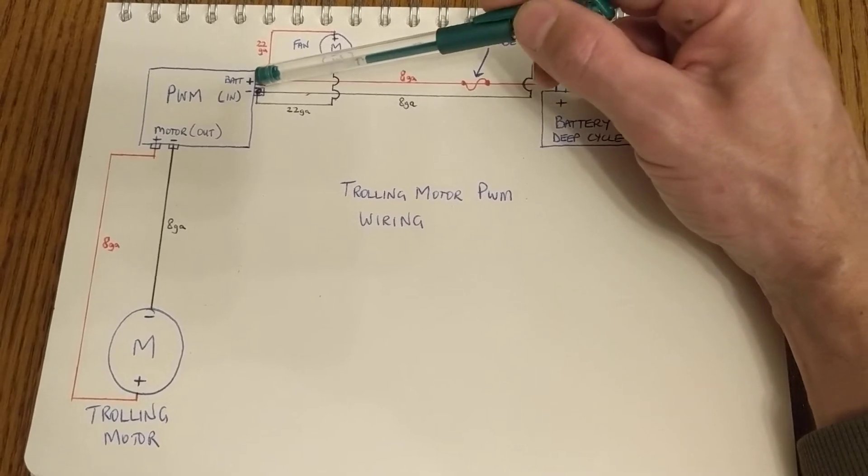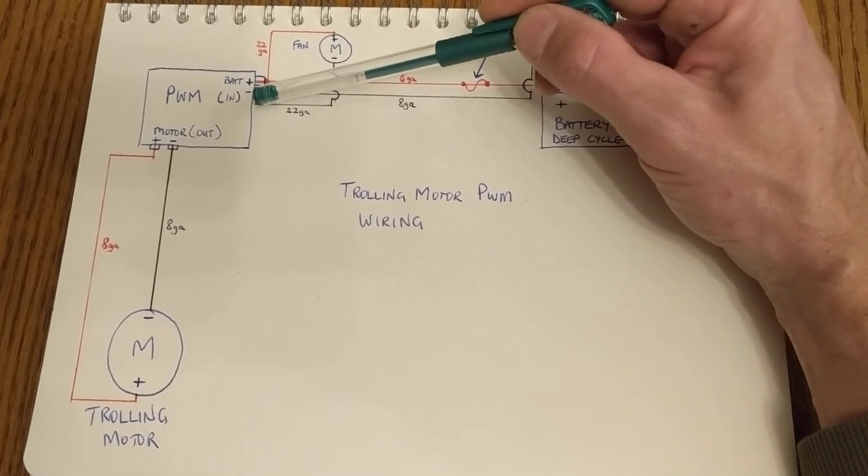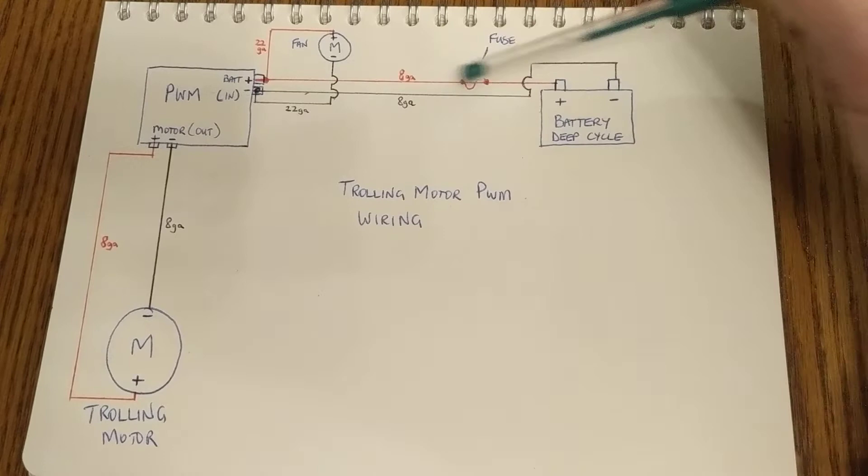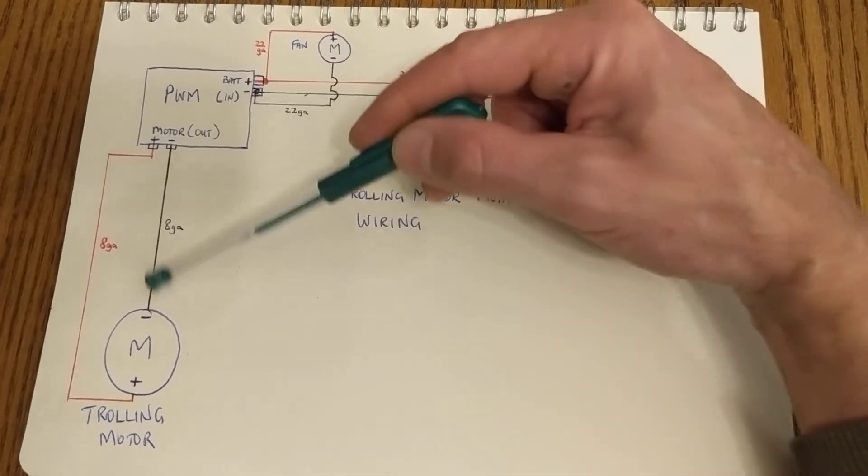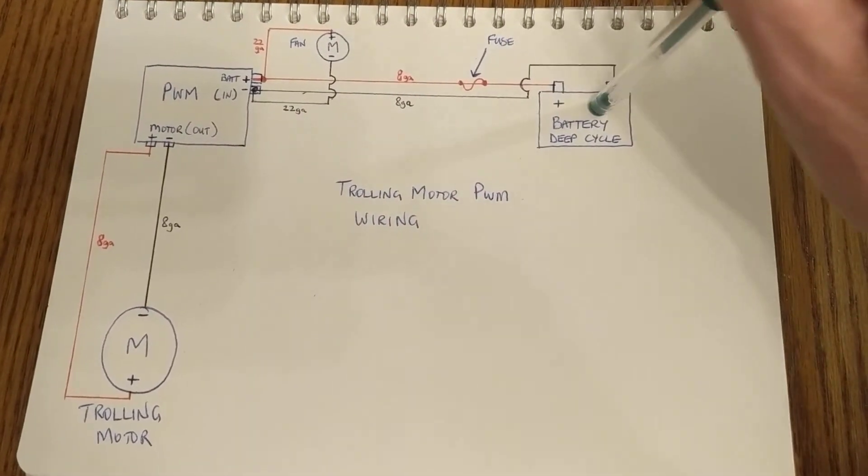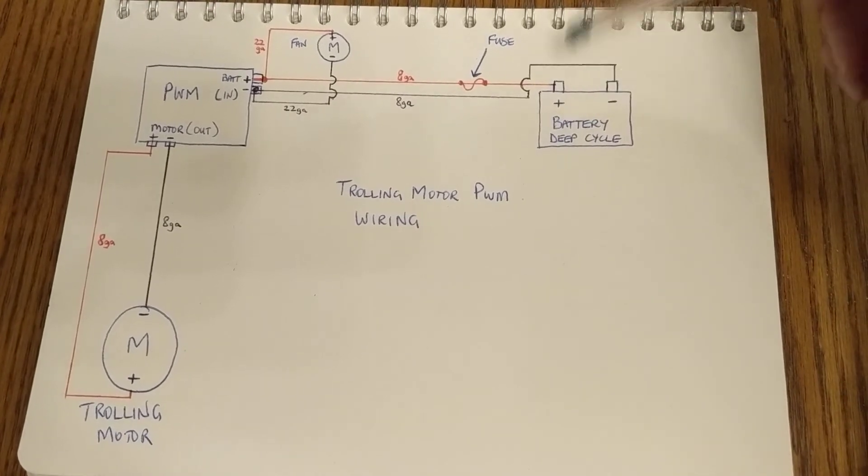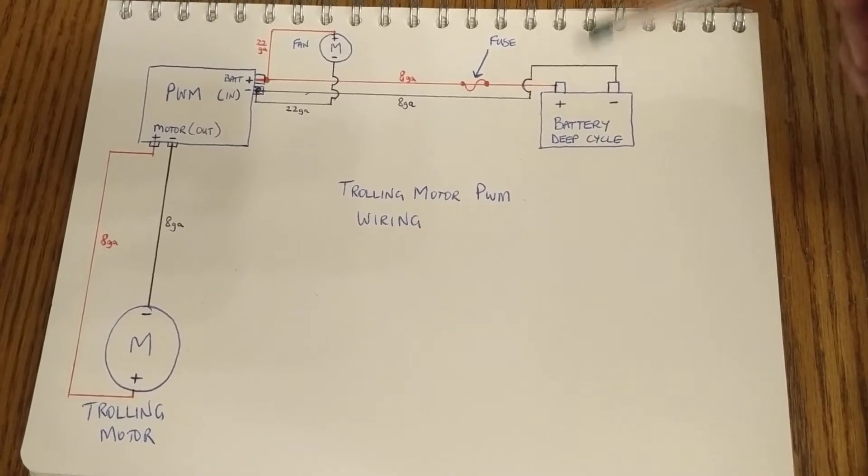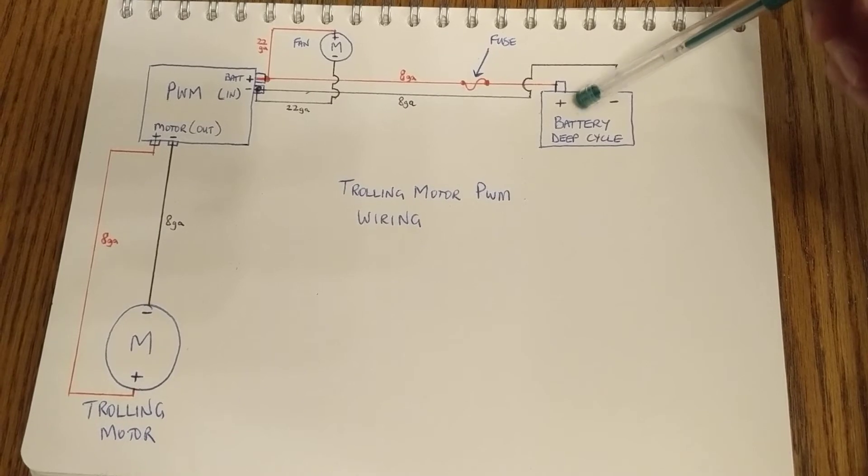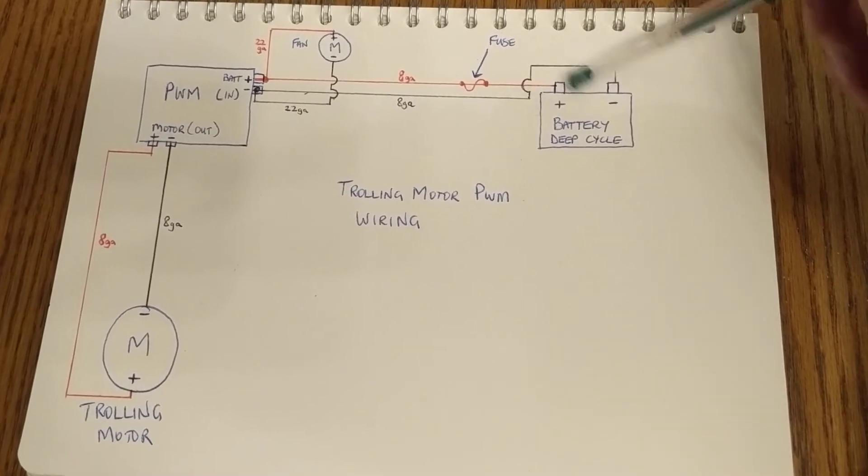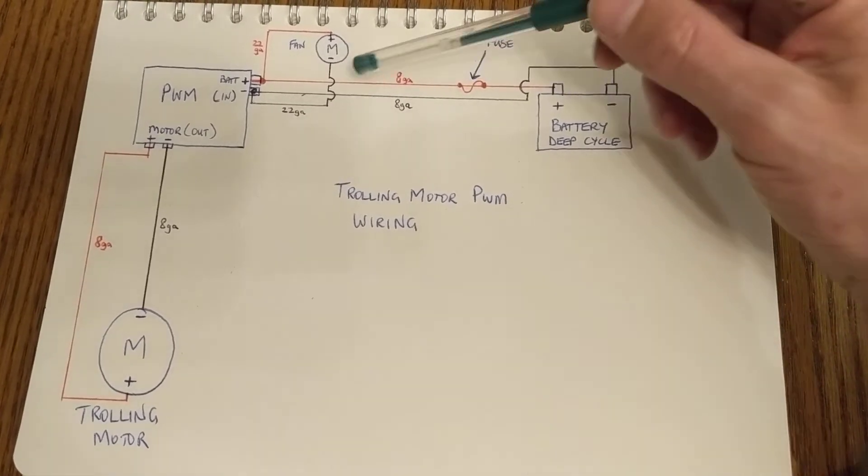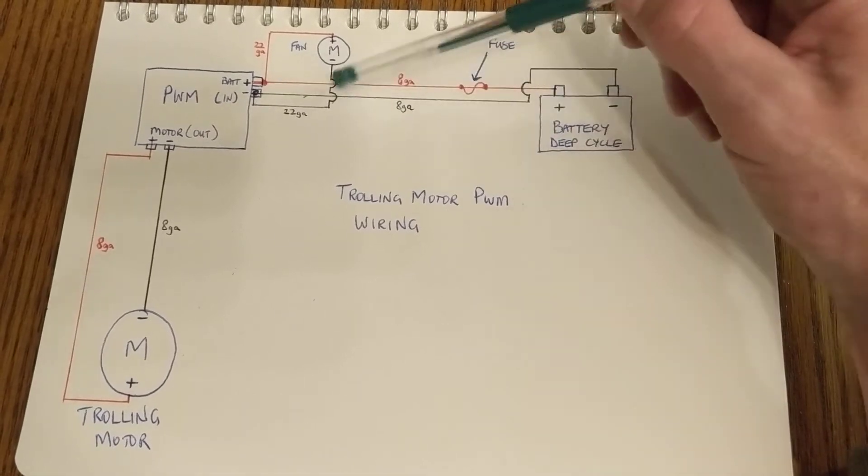And the way I have mine set up is I disconnected here to take it in and out of the canoe just so I don't have all this wire, because I put my battery at the front of the canoe to give me better counterbalance I guess. So the front of the canoe is not sticking way up in the air. I put the battery in my tackle box and all the heavy things right on the front to try and level it out when I'm by myself.